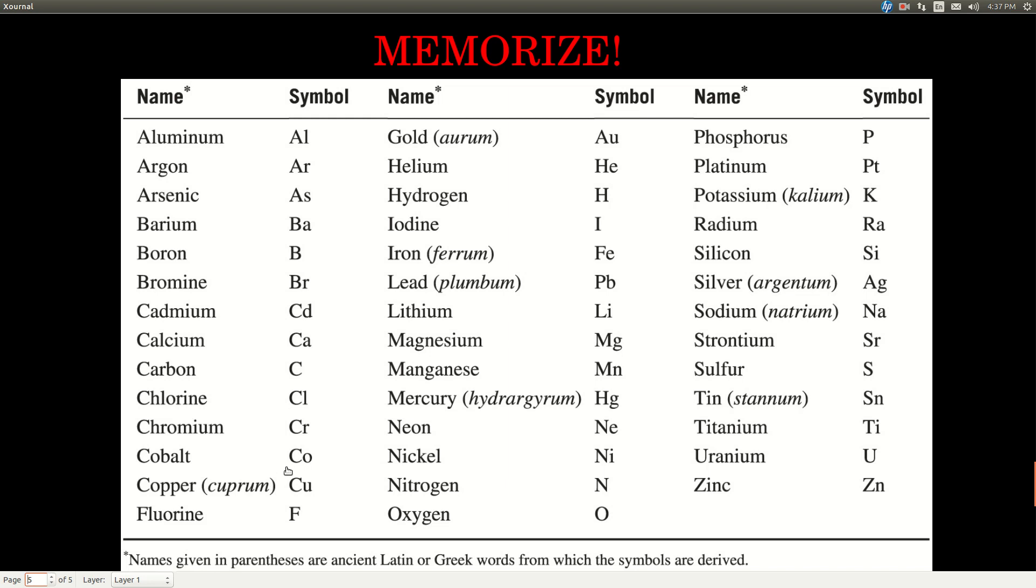Now, the periodic table, which we're going to see in a little bit here, essentially is a list of all the elements that are known to man. These are some of the more common ones, and I'm going to ask you to memorize the names and the symbols for these, and you'll learn others as we go along.